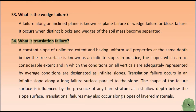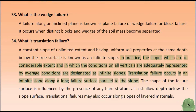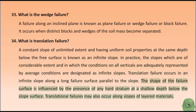What is translation failure? A constant slope of unlimited extent having uniform soil properties at the same depth below the free surface is known as an infinite slope. In practice, slopes of considerable extent in which conditions on all verticals are adequately represented by average conditions are designated as infinite slopes. Translation failure occurs in an infinite slope along a long failure surface parallel to the slope. The shape of the failure surface is influenced by the presence of any hard stratum at a shallow depth below the slope surface. Translational failures may also occur along slopes of layered materials.